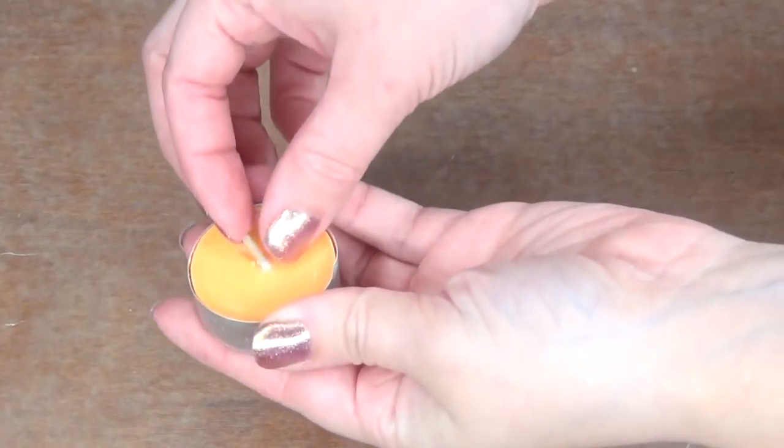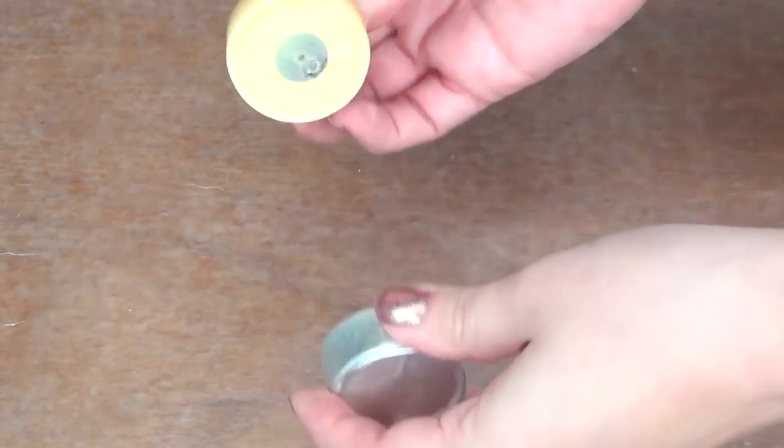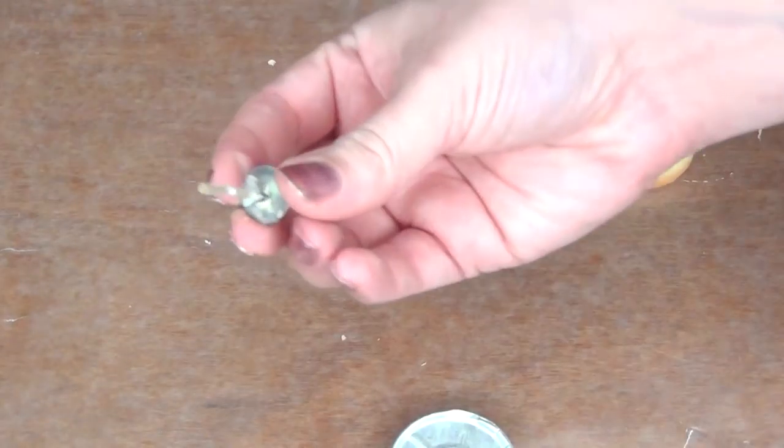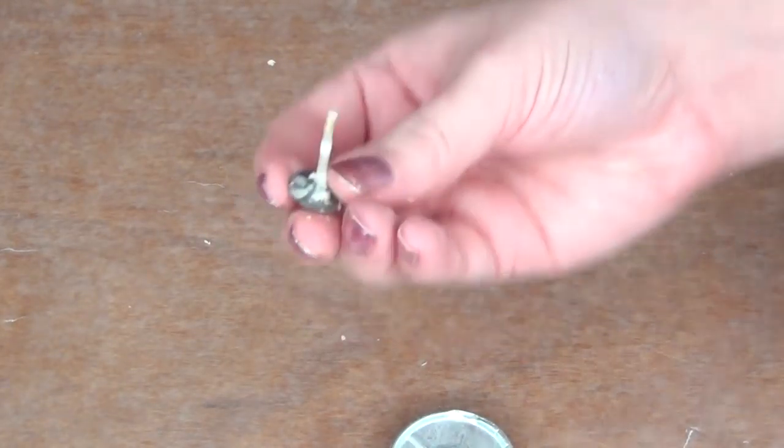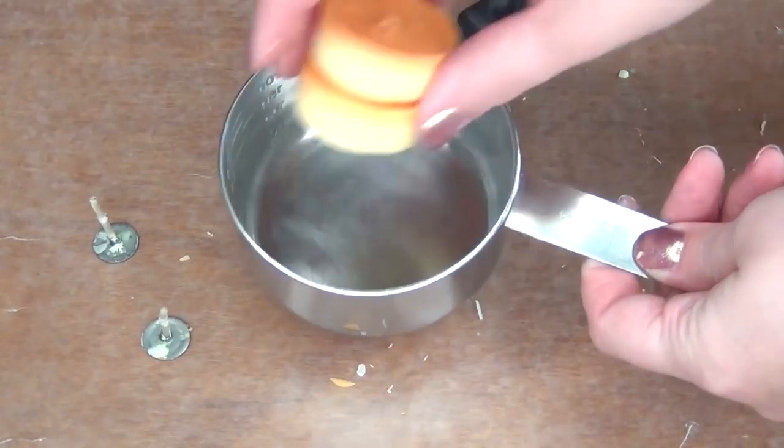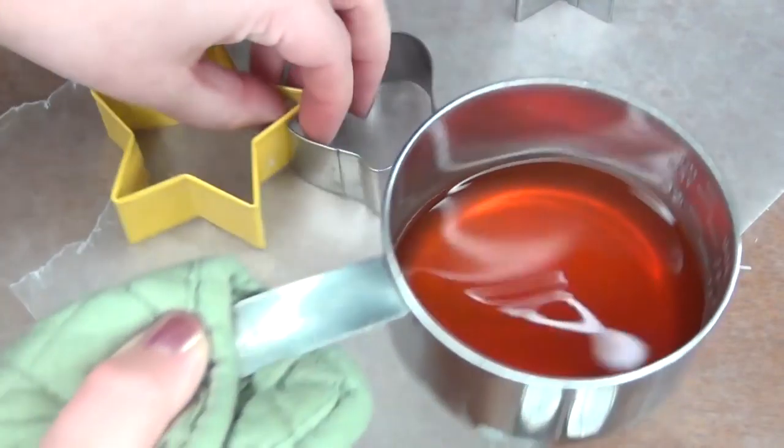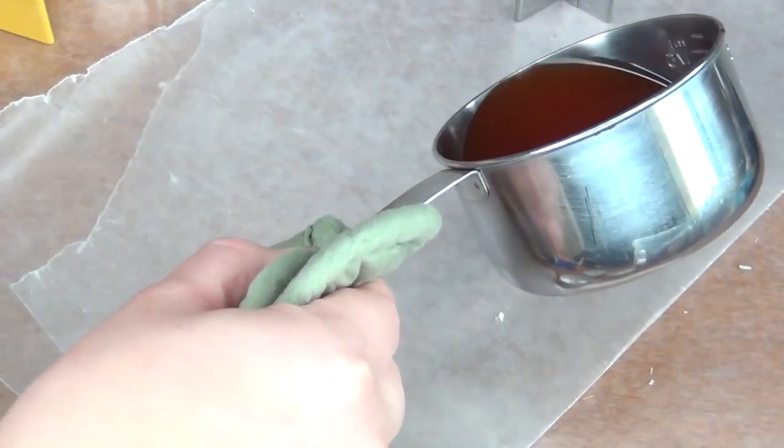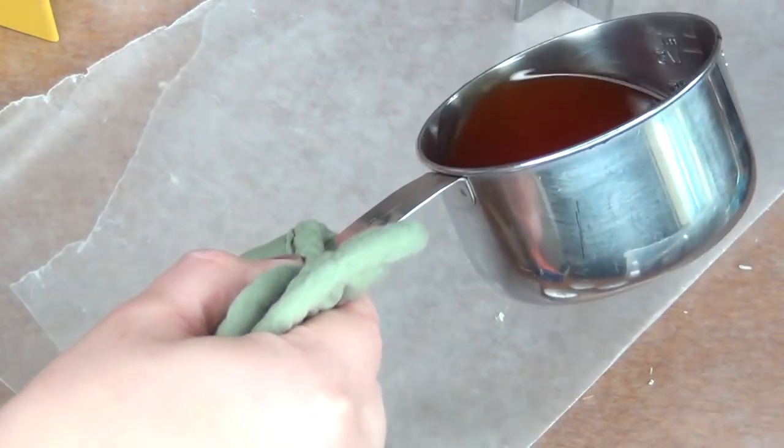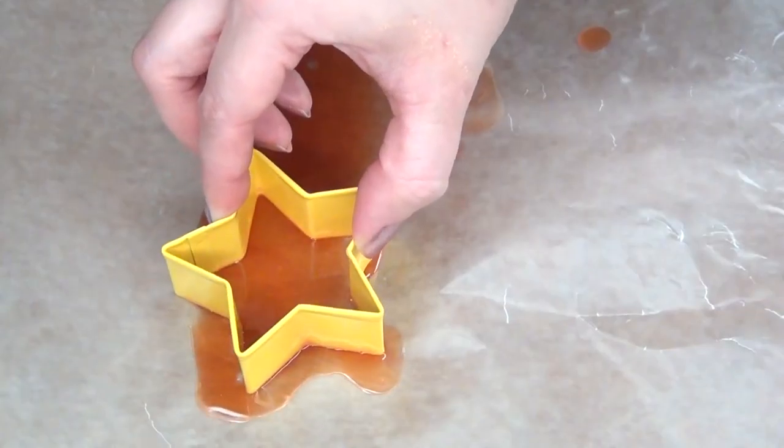Begin by taking your tea lights apart, pull the bottom off, and then use a knife to pry the wick out and save that for later. You'll want to melt enough wax to fill your cookie cutters. I melted four of these just by setting my wax melting container in the pan of boiling water until the wax had a chance to slowly melt.